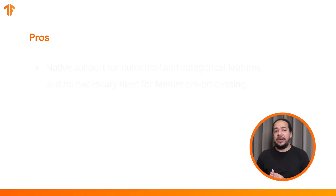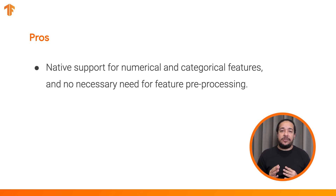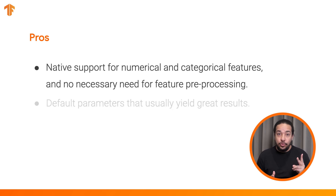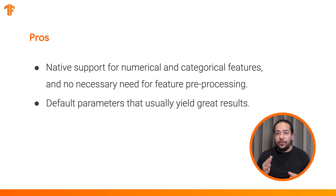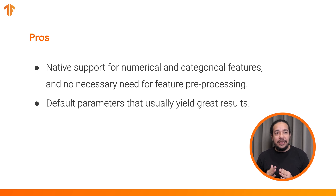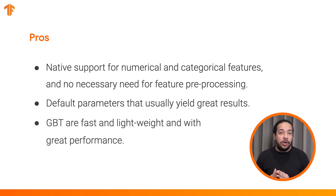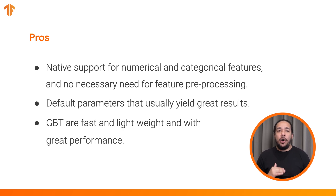Some pros of gradient-boosted trees are: 1. Like other decision forest algorithms, they natively support numerical and categorical features and often do not need feature pre-processing. 2. Gradient-boosted trees have default hyperparameters that often give great results; nevertheless, tuning those hyperparameters can significantly improve the model. 3. Gradient-boosted tree models are generally small in number of nodes and memory, and fast to run — often just one or a few microseconds per example.